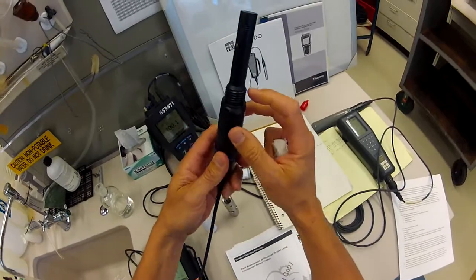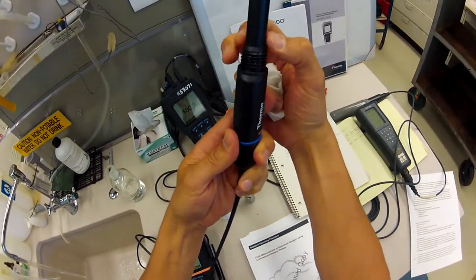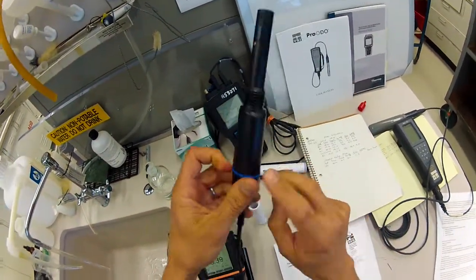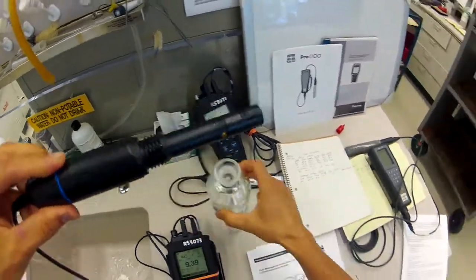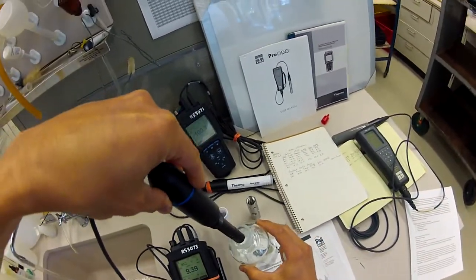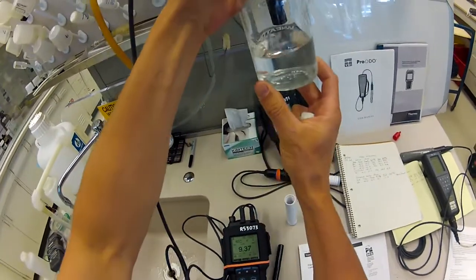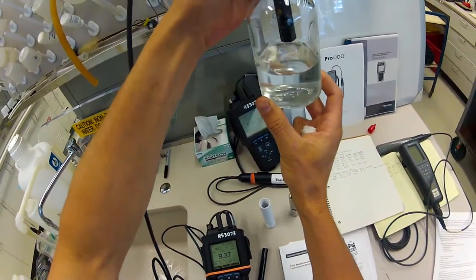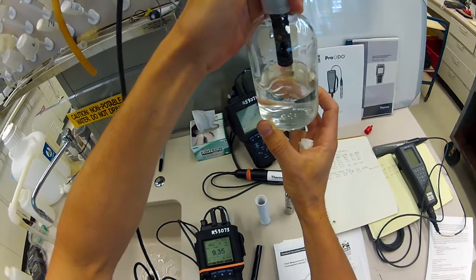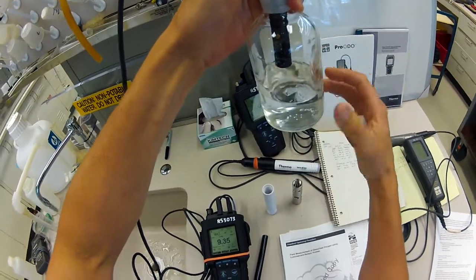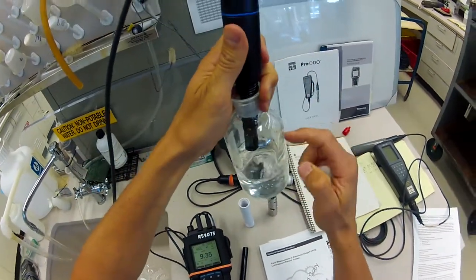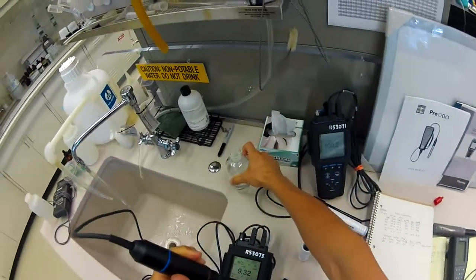The probe itself usually has some sort of little shoulder here and neck, and that will generally allow the probe to slide into a 300 milliliter BOD bottle like so. And you can use this either for making measurements if you fill it up high enough, or you can actually use this as a calibration chamber if you need to as well.